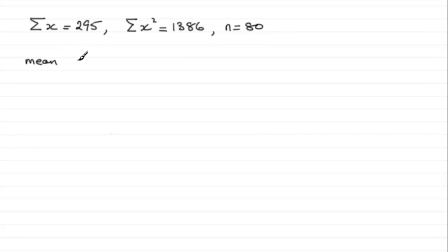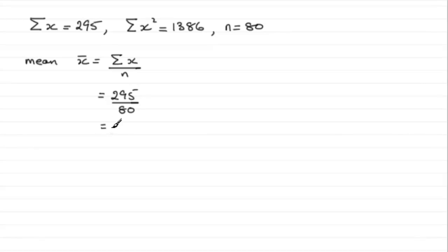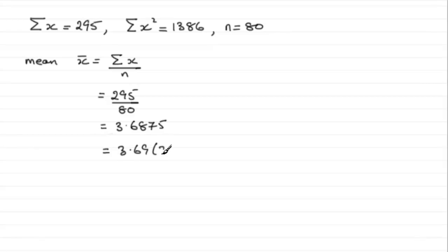The mean, which I'm going to call x-bar, is equal to the sum of x divided by n. For this particular one, we've got 295 divided by 80. If you work this out, you get 3.6875, and rounded to two decimal places, that's going to be 3.69 to 2dp.